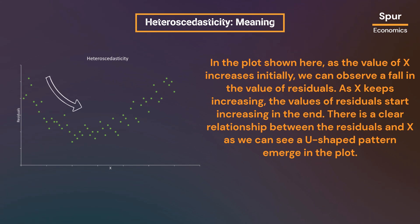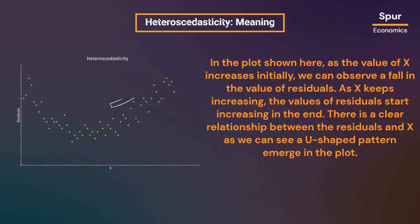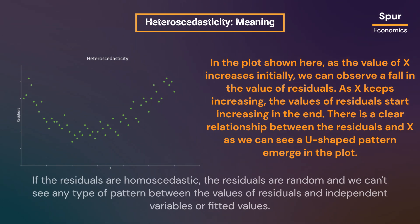In the plot shown, as the value of X increases initially we can observe a fall in the value of residuals. As X keeps increasing, the values of residuals start increasing, and a clear U-shaped pattern emerges in the plot. If the residuals were homoscedastic, they would be random and we would not see any pattern between the values of residuals and the independent variables or fitted values.